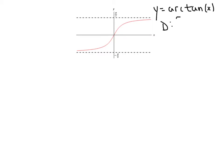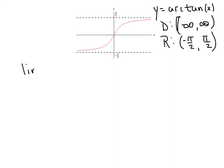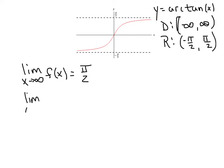The domain of arc tangent is the set of all real numbers — we're going from negative infinity to positive infinity. The range is negative π/2 to positive π/2, non-inclusive — it's an open interval, because the graph never actually reaches π/2, it just approaches it. That gives us some fun limit questions: the limit as x approaches infinity is π/2, and the limit as x approaches negative infinity is negative π/2.